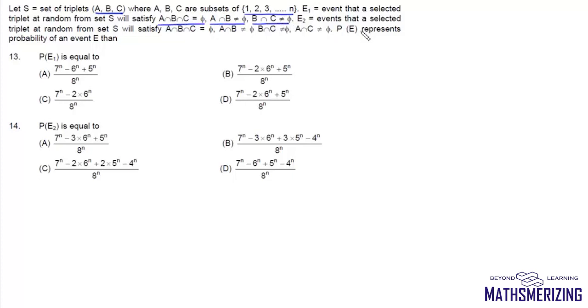And E2 will be the event that a selected triplet at random from set S will satisfy A∩B∩C = ∅, A∩B ≠ ∅, B∩C ≠ ∅, and A∩C ≠ ∅. PE represents the probability of an event. Note that the triple intersection is empty but A∩B and B∩C are each non-empty.